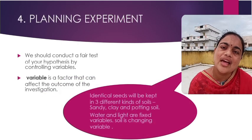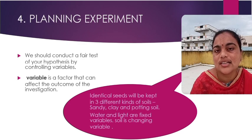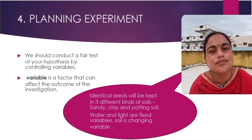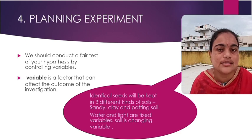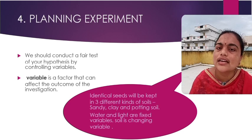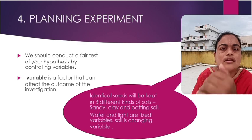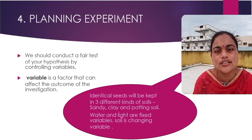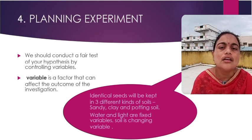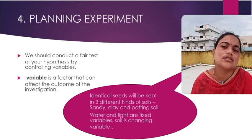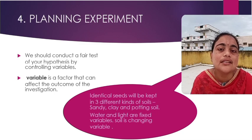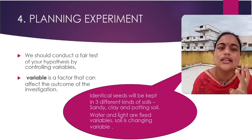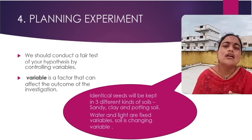Then we have to plan an experiment to find out whether our hypothesis is correct or not. While planning, we should write a stepwise procedure and identify the variables. A variable is a factor that can affect the outcome of an investigation. There are two types of variables: fixed variables and changing variables. The changing variable must be controlled. Here we are testing three kinds of soil — sandy, clay, and potting soil.